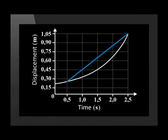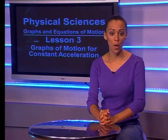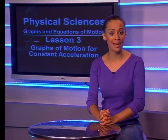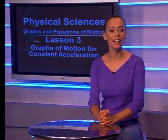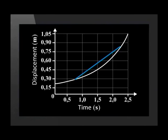If we join any two points on this curve, we can find the slope of the straight line. We use this line to calculate the average velocity between the two points. In this case, from 0.5 seconds to 2.5 seconds. So, when we connect two points on a curved displacement-time graph with a straight line, we use this straight line to calculate the average velocity.